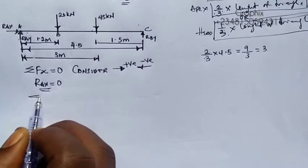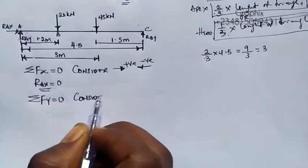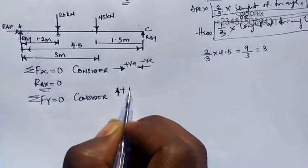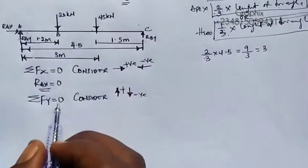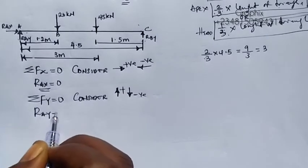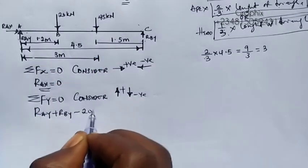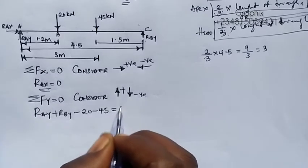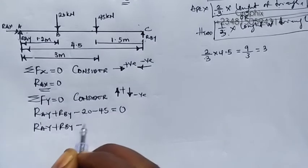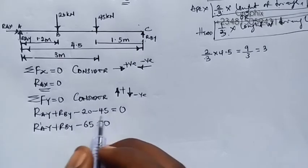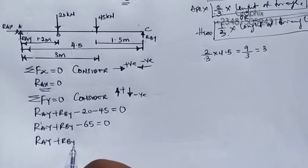The next condition is: summation of forces in the y-direction equals zero, with upward forces positive and downward forces negative. We have two upward forces — RAY plus RBY — and two downward forces, minus 20 and minus 45. So RAY + RBY − 65 = 0, which gives RAY + RBY = 65 kN. This is Equation 1.